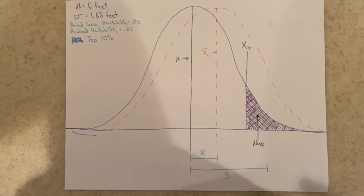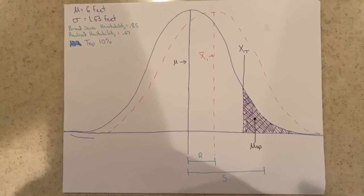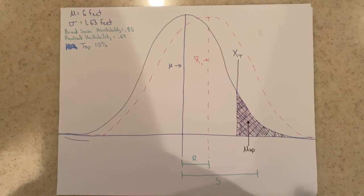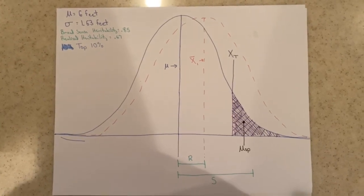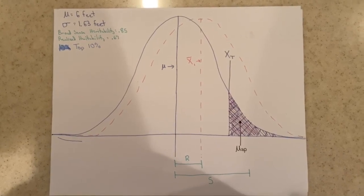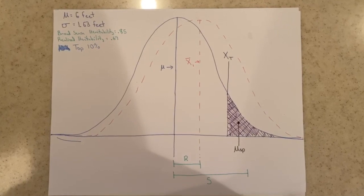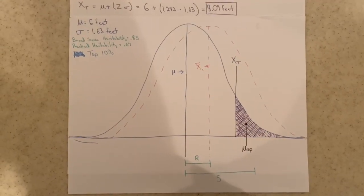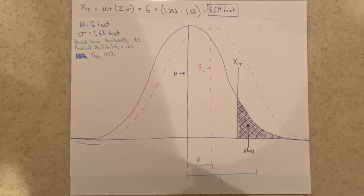We are given a mean feather length, indicated by the mu sign, of 6 feet, and our standard deviation is 1.63 feet. We are also given a broad-sense heritability — which is the proportion of phenotypic variance due to some sort of genetic effect — of 0.85, and a realized heritability — which is phenotypic variance due to the additive genetic effects — of 0.67. We have concluded that we want to breed another generation using the top 10% of parents in terms of feather lengths in our population.